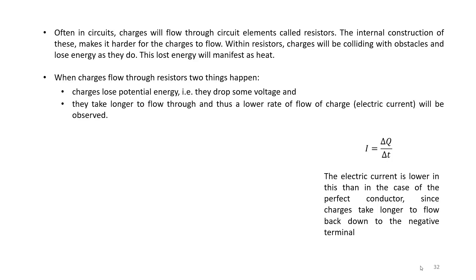So two things happen when charges flow through a resistor. The charges will lose some potential energy, which can also be phrased in terms of them dropping some voltage, and also they will take longer to flow through. Thus there will be a lower rate of flow of charge, or electric current, through them. If you think about the formula, we'll have the same delta Q but it will take a longer interval of time delta T for the charge to flow through the same volume.